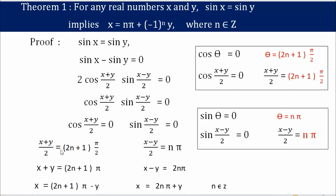Writing both relations: from the first, the 2's cancel giving x plus y equals (2n+1)π; from the second, multiplying both sides by 2 gives x minus y equals 2n pi. Since we want x on the left and y on the right, let's shift y to the other side of the equation in both cases.